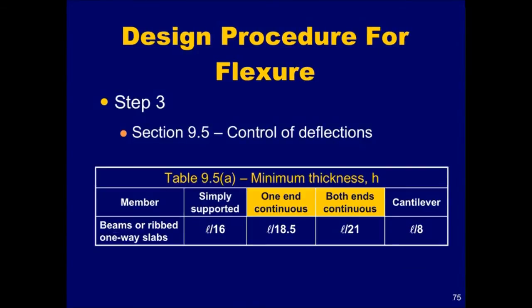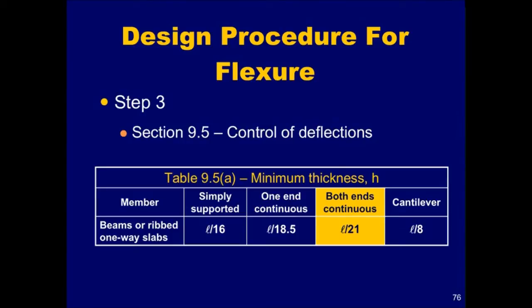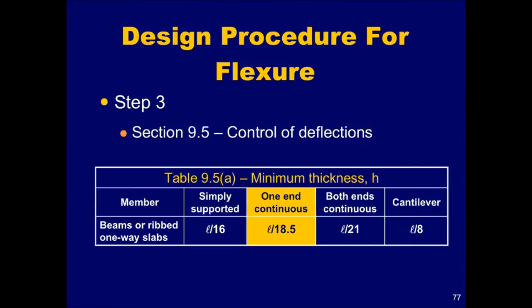Let's consider the usual case of continuous construction, and let's focus on beams, knowing that the following discussion applies equally well to one-way slabs. According to Table 9.5a, it is permitted to use one minimum thickness for the interior spans, and a different minimum thickness for the end spans. Using more than one depth along the same line of beams is not economical. Thus, the minimum depth should be determined based on the column one end continuous, since this thickness will satisfy the deflection criteria for all spans. Deflections need not be computed when a thickness equal to at least the minimum is provided.